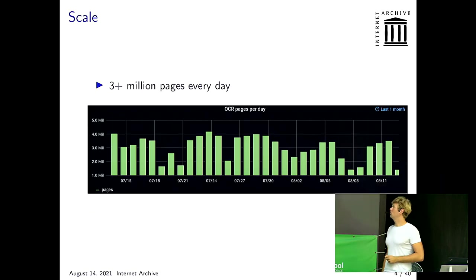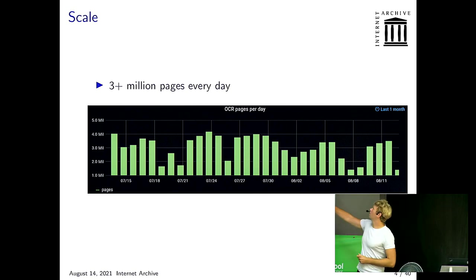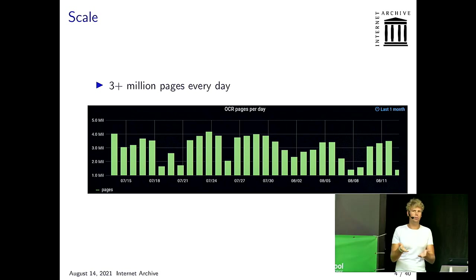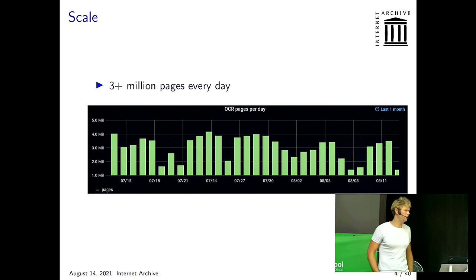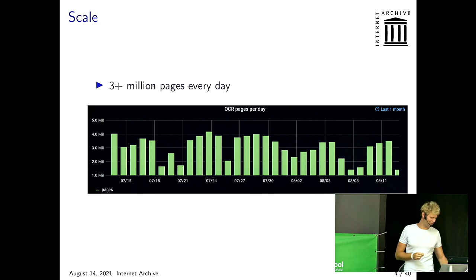We do a lot of digitization every year. We are OCRing about three million pages per day — people upload things to us and we also digitize our own books. In total, three million pages every day are OCRed by us, which amounts to probably 30 to 40 per second. So that's pretty quick — though don't pin me on that number as I did a very quick calculation.